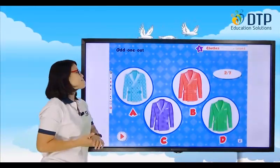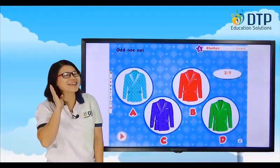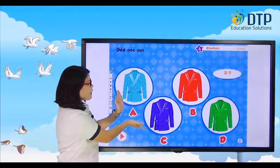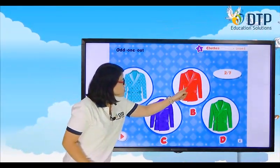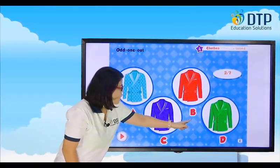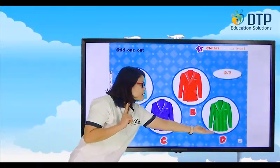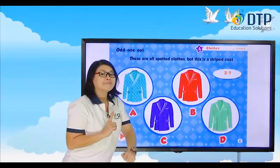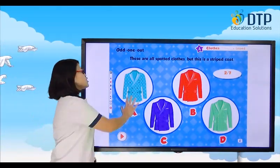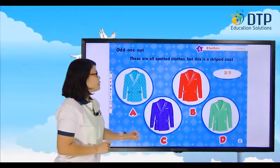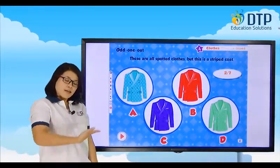Let's have one more. I know — they are all coats. But look at the design, the pattern. I see tiny circles and I see lines. Where's the odd one out? These are all spotted clothes, but this is a striped coat — yes, with lines. So these are all spotted clothes, but this is a striped coat with lines.